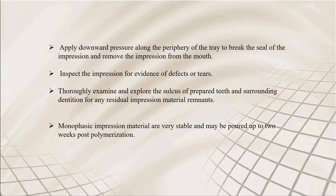Apply downward pressure along the periphery of the tray to break the seal — this is very important, because these are tight-fitting materials that create suction in the mouth. You can also use a three-way syringe with air to help break the seal. Inspect the impression for any tears or defects; thoroughly examine the sulcus of the prepared teeth, surrounding dentition, and any residual impression remnants. Monophase impression materials are very stable and can be poured within two weeks post-polymerization, but ideally should be poured within half an hour.